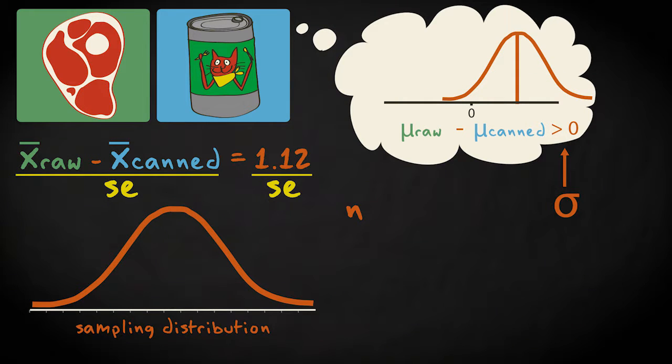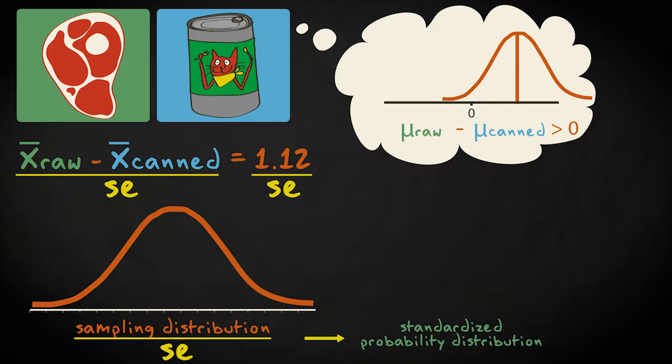By dividing the sample statistic by the standard error, we correct for variation and sample size. The sampling distribution for our particular sample is turned into a standardized probability distribution. Now we know the shape and the scale of the probability distribution.